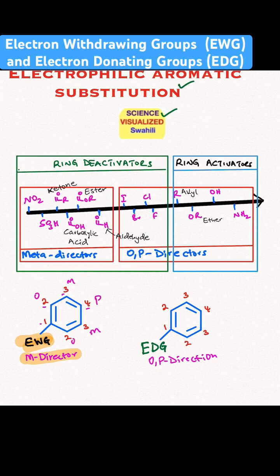So that means the new group will go to the meta positions. The electron withdrawing group deactivates the ring by withdrawing electron density from the ring.